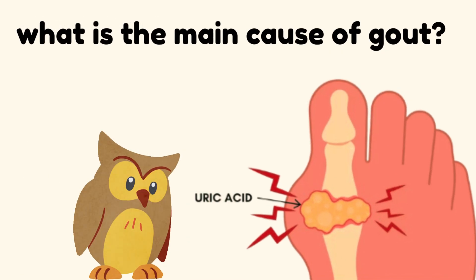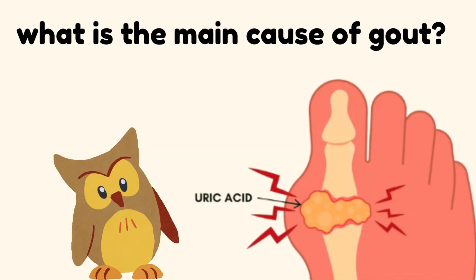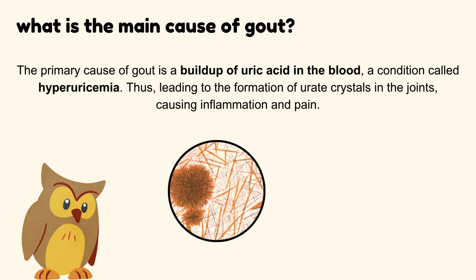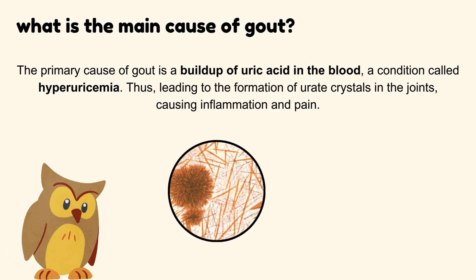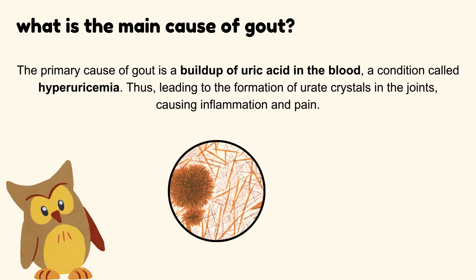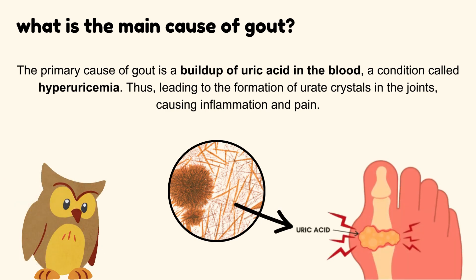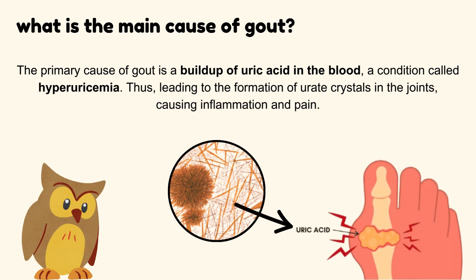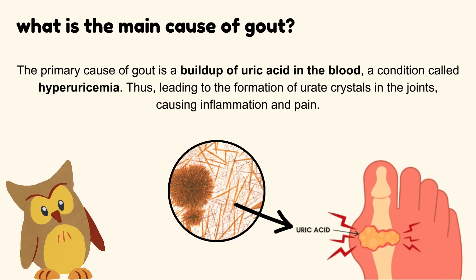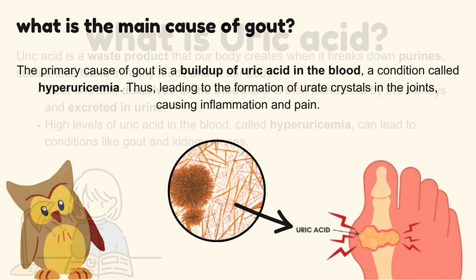What is the main cause of gout? The primary cause of gout is a build-up of uric acid in the blood, a condition called hyperuricemia, leading to the formation of urate crystals in the joints, causing inflammation and pain.